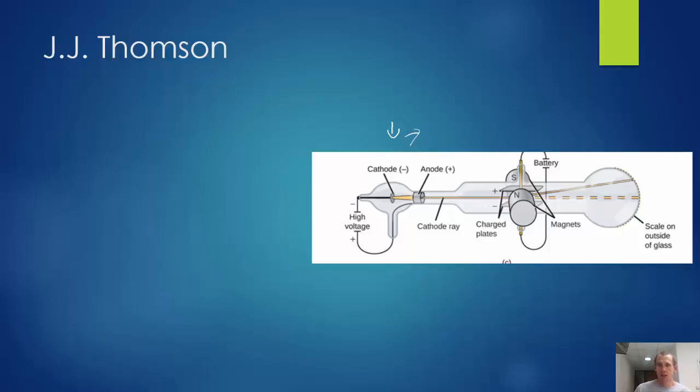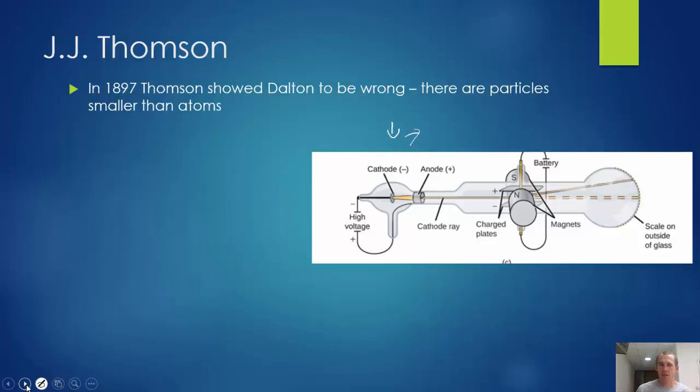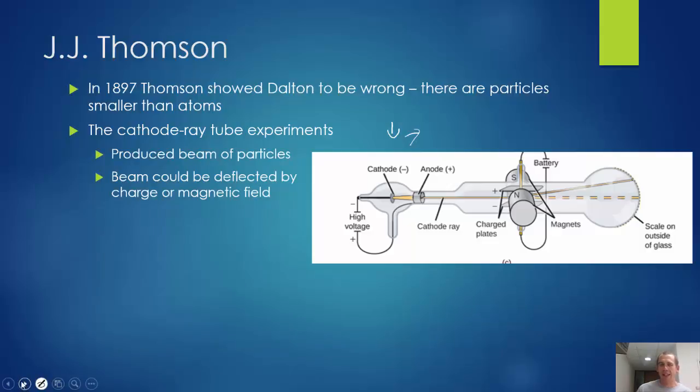So Thomson was doing experiments with this cathode ray tube, and he found some interesting things. Things that didn't quite jive with Dalton's atomic theory. There are particles smaller than atoms. In his cathode ray tube experiment, he would change what the cathode was and what the anode was, because these are the pieces that are actually generating the particles. And he found that when he changed those pieces, nothing mattered. It didn't have any effect.